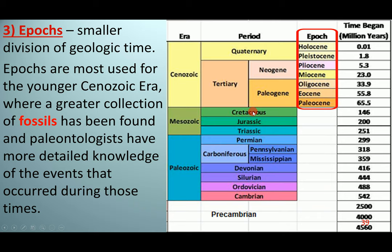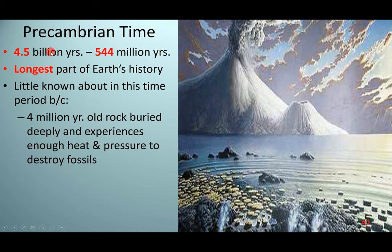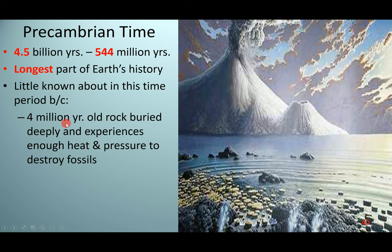The Precambrian time happened between 4.5 billion years ago and 544 million years ago — by far the longest part of Earth's history. This is when Earth was starting to develop. Little is known from this time because the rock is about four billion years old, and the rock cycle was fully completing during that period, destroying a lot of evidence of early life due to the heat and pressure involved.